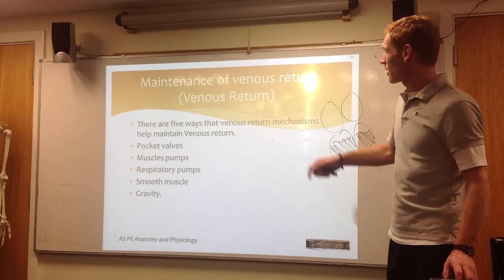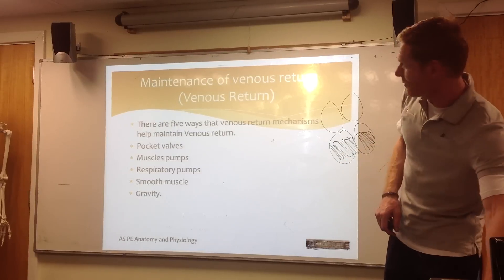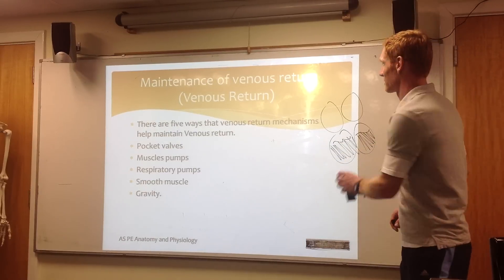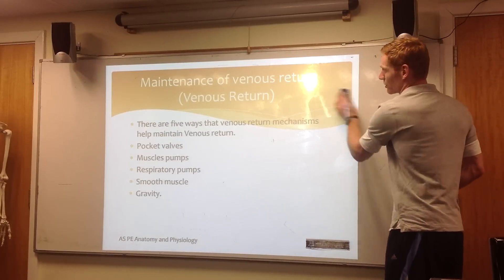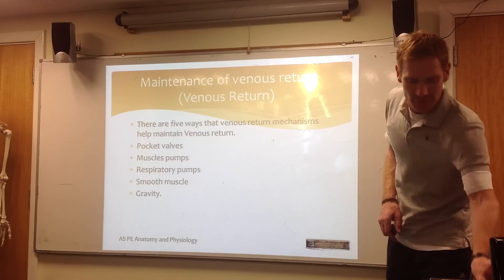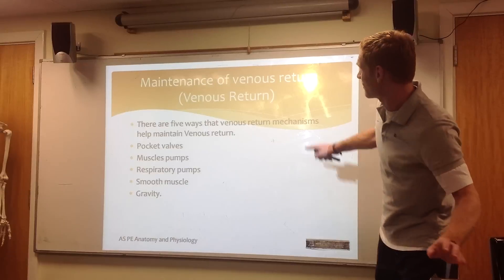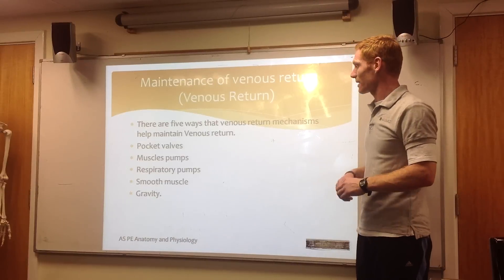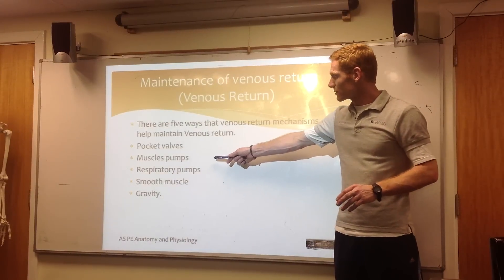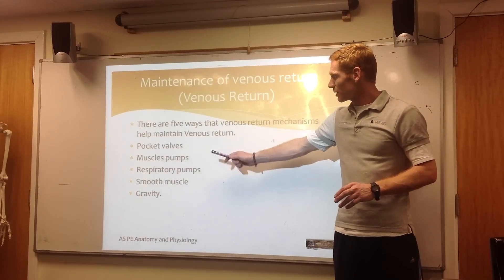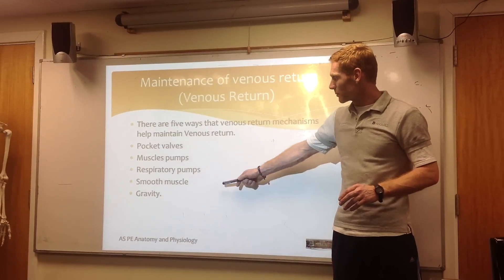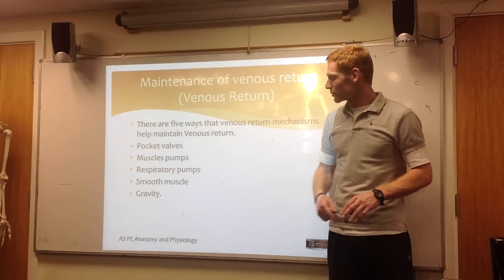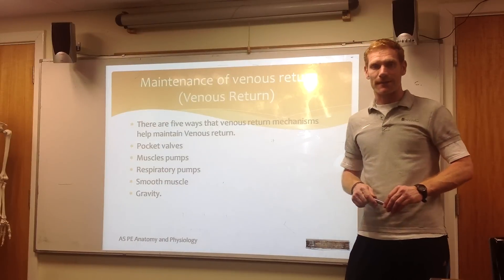There are five main ways that venous return can be achieved — these are the mechanisms that are actually helping: pocket valves, muscular pump, respiratory pump, smooth muscle, and gravity.